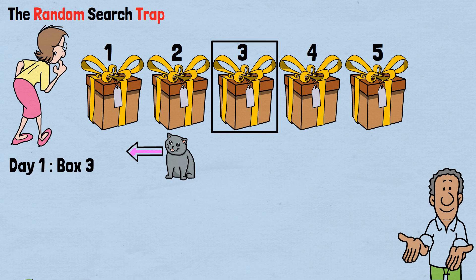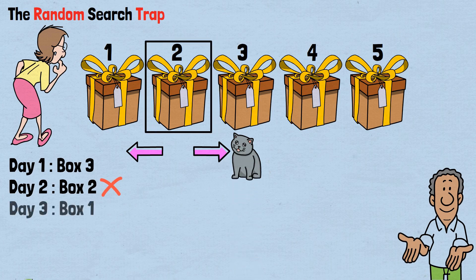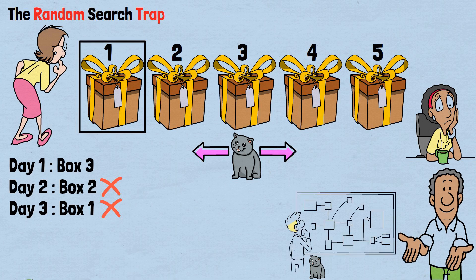That night, the cat moves from box 2 to either box 1 or box 3. Let's say it chooses box 3. On day 2, you randomly decide to search box 2, where the cat was yesterday. But the cat has moved to box 3. You miss again. On day 3, the cat moves from box 3 to either box 2 or box 4. You randomly choose box 1. Another miss. This pattern can continue indefinitely. The random approach fails because it doesn't account for the cat's predictable movement pattern. You're essentially playing a game of chance against a system that follows strict mathematical rules.